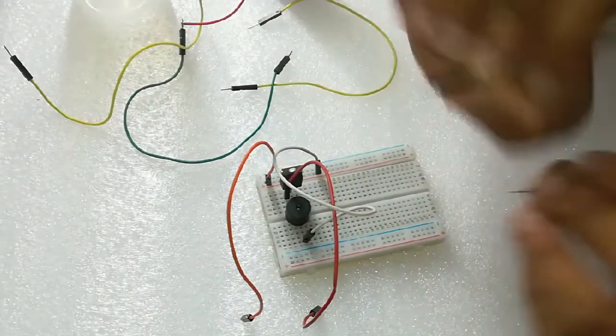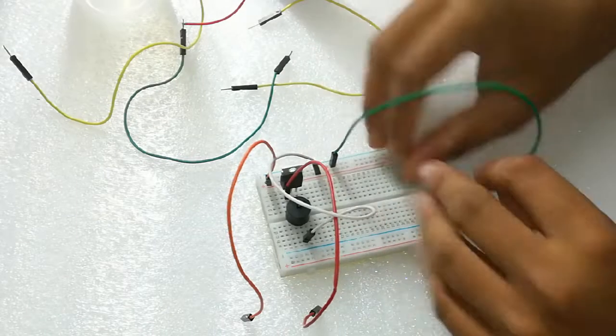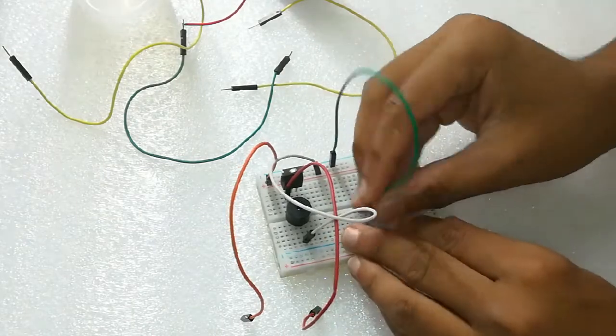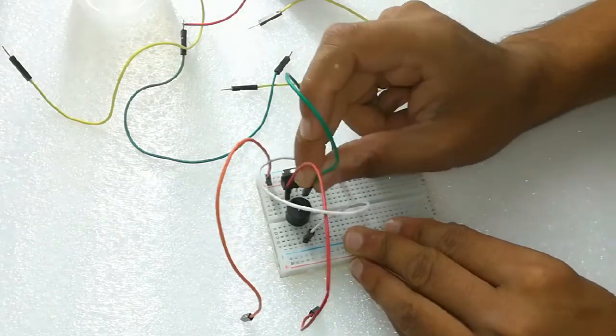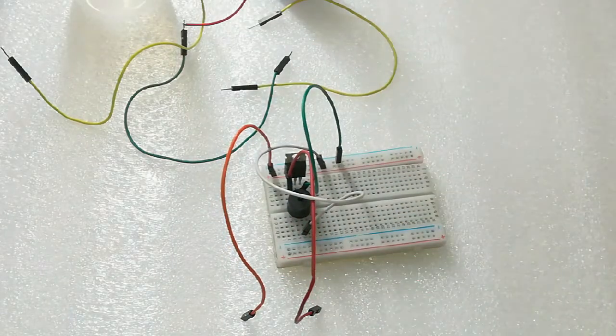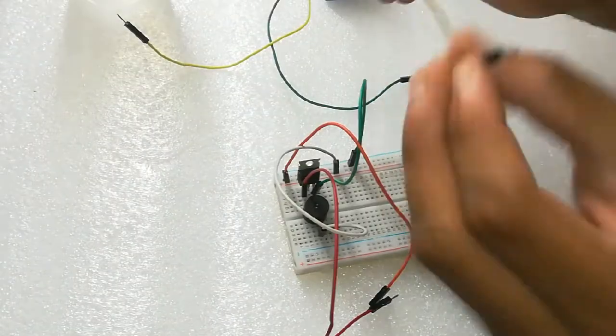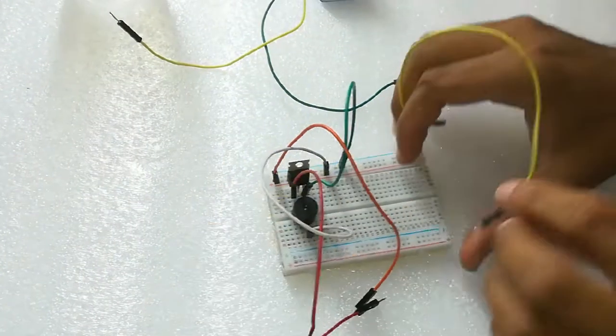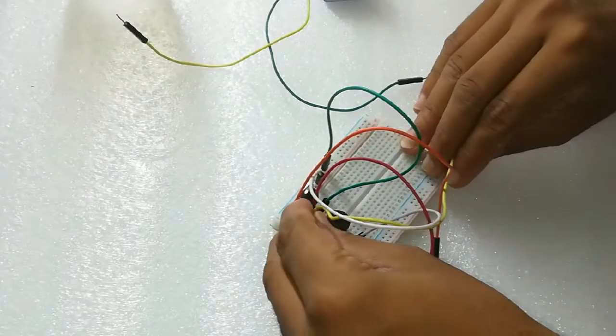Now, we will take another jumper cable for the connection of your source. Negative of the battery will be connected on the source. So, a jumper cable from the negative of your battery to the source.